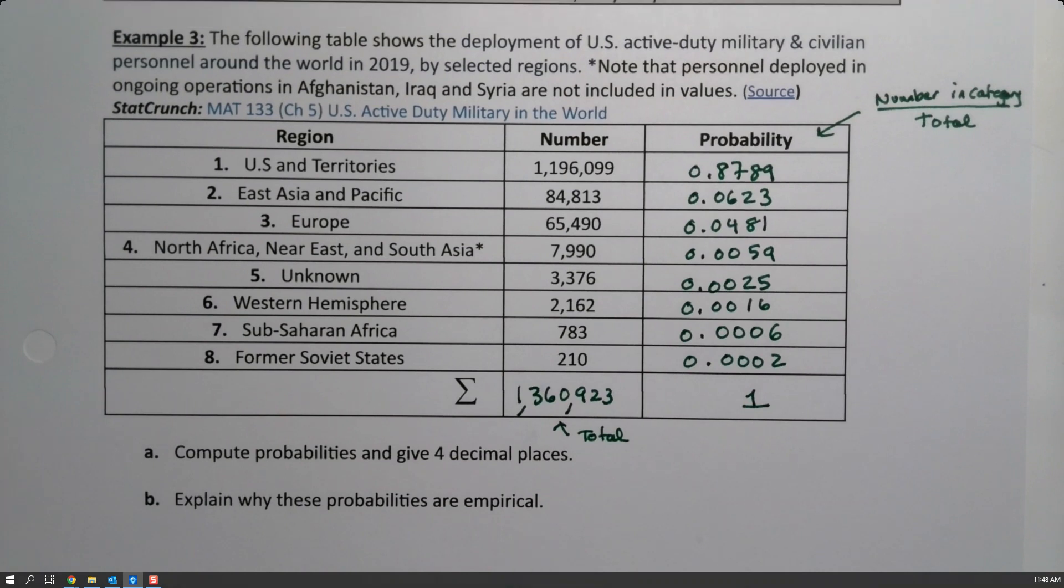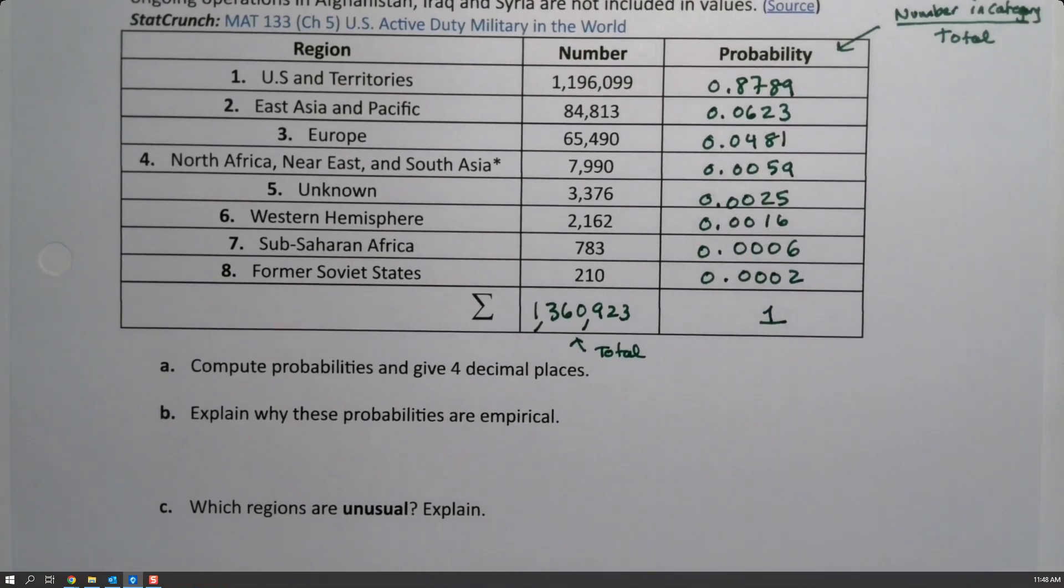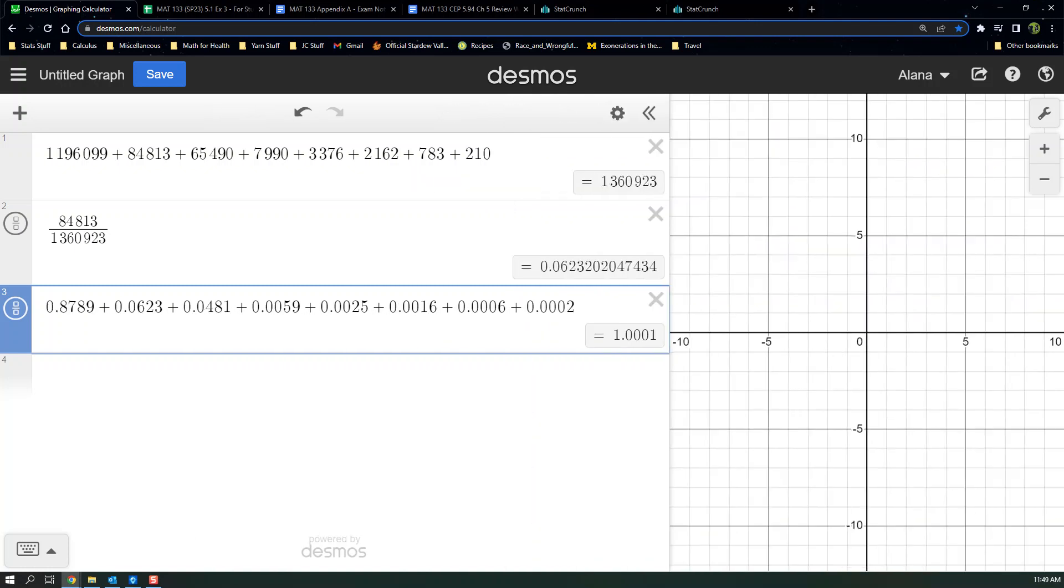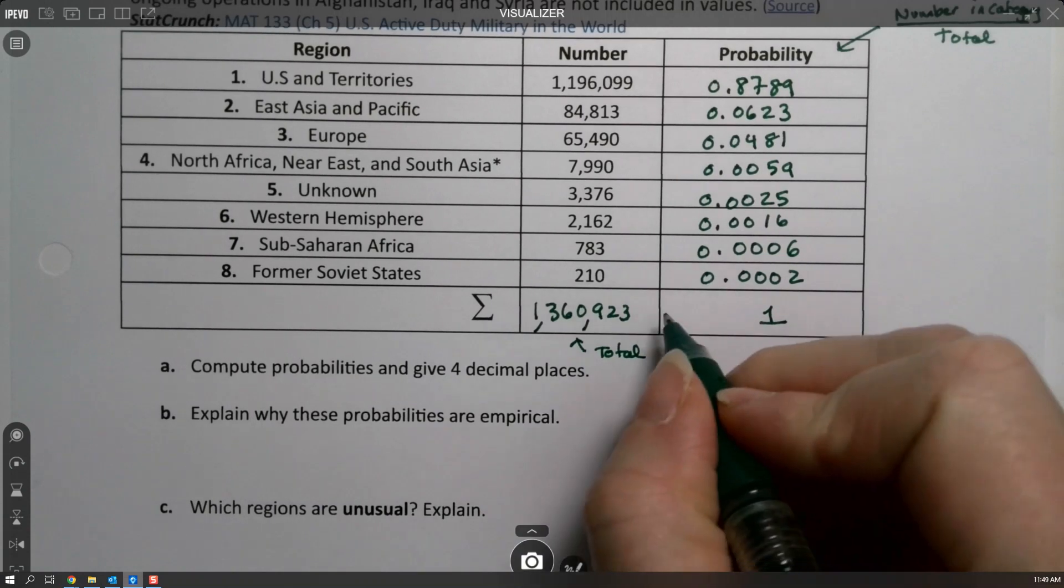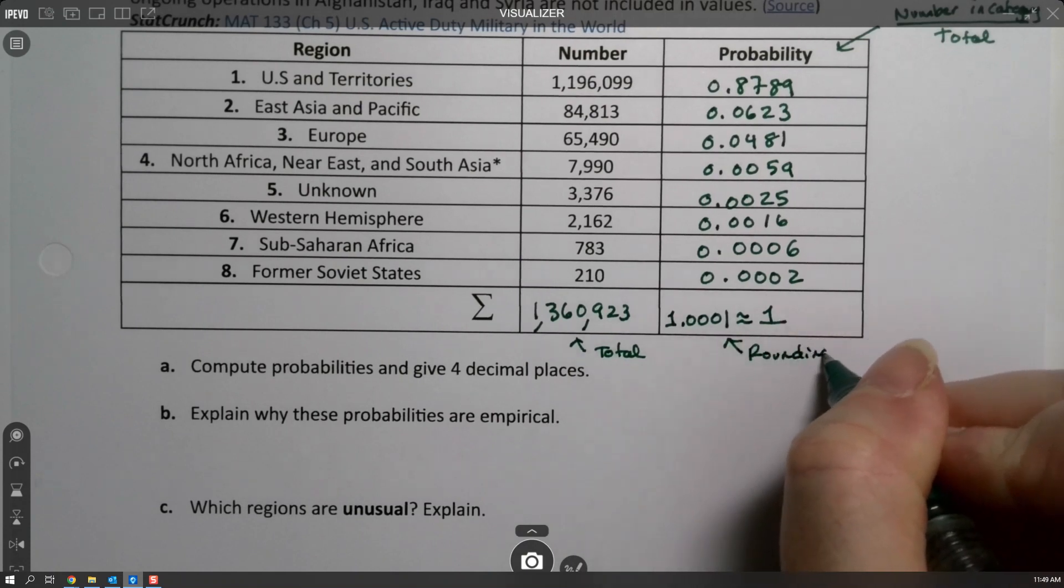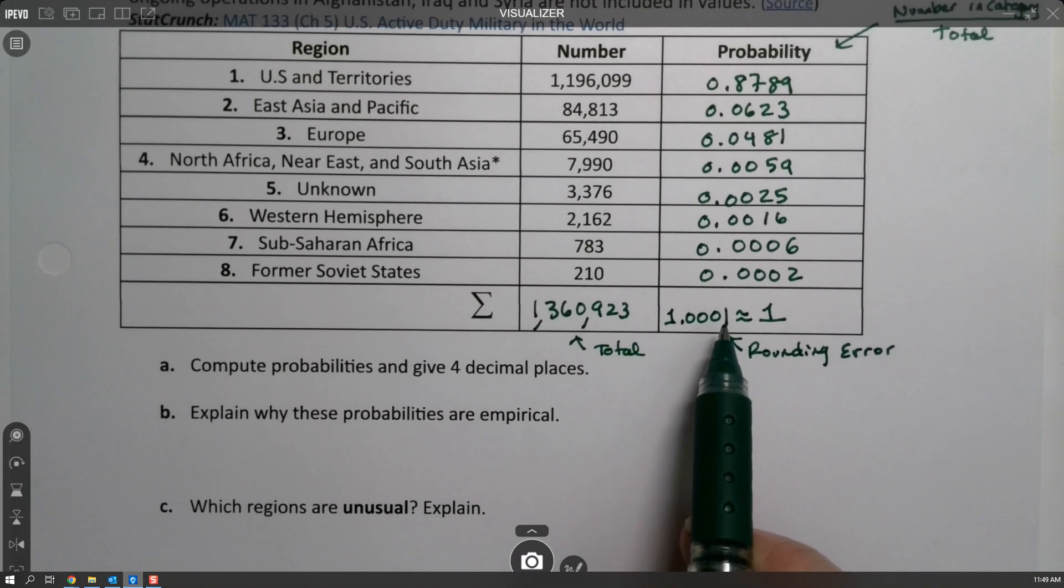Notice the total of these values is one. It has to be in order to make this work. There might be a slight bit of rounding error, so let me double check in Desmos. Indeed there is a little bit of rounding error - we end up with 1.0001. But when you're off by one in that place, we're not worried because that is rounding error. That's a rounding error issue when you round all of these decimals to four decimal places.